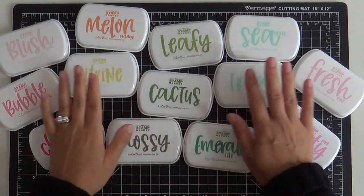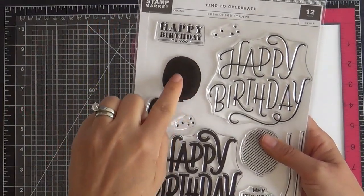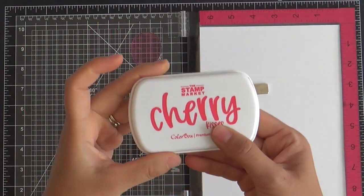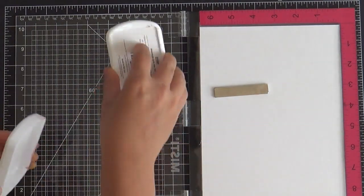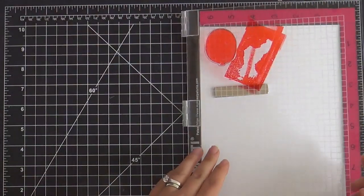I believe there's 13 if I counted correctly and I'm using this balloon. This is an older stamp set by the Stamp Market. I can't find it in the shop. It's old but I just used the balloon to make a swatch chart.